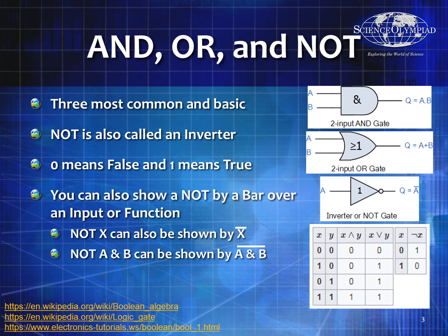You'll notice that we've got an A and B input for two inputs, and an A input for a single input, and the output is usually referred to as Q. There are many different ways to show NOTs, ANDs, and ORs. If I put a bar over A, that means NOT A. If I put A plus B, that means A OR B. If I multiply A times B, that's the same thing as saying A AND B.